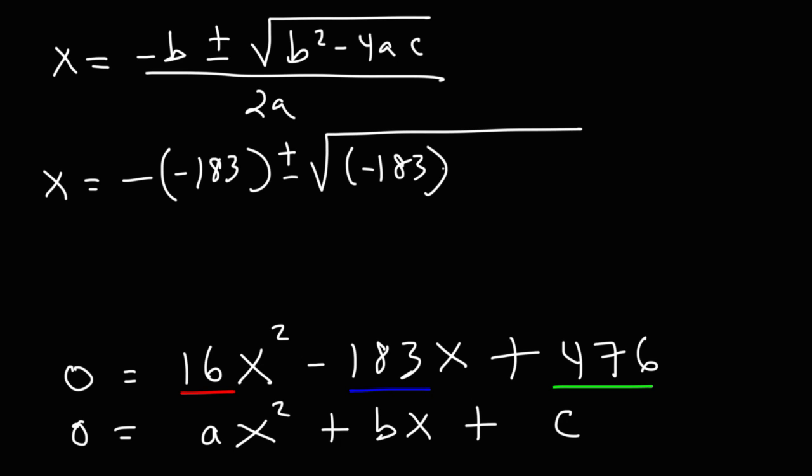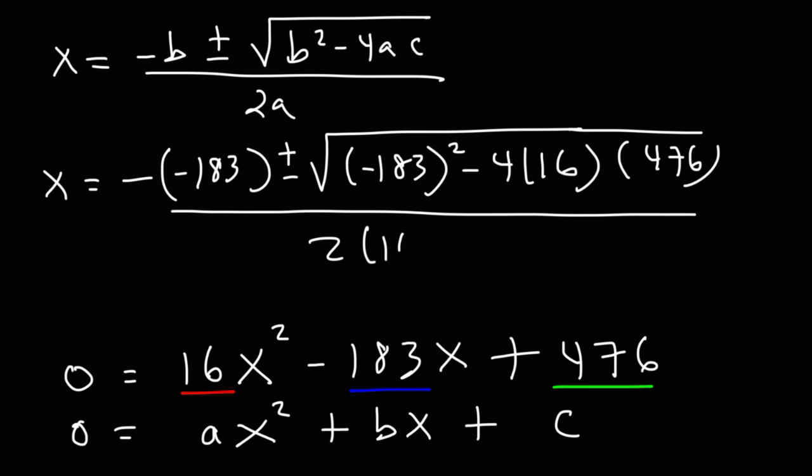b squared, that's negative 183 squared. And then minus 4 times a, a is 16, and c is 476, divided by 2a, or 2 times 16.